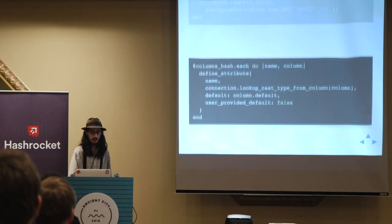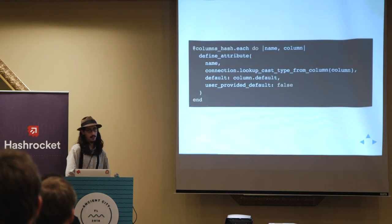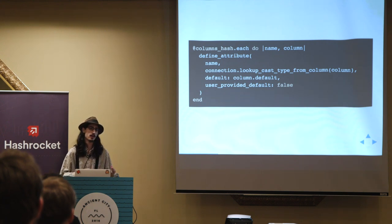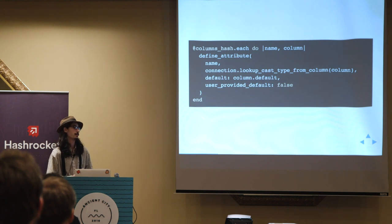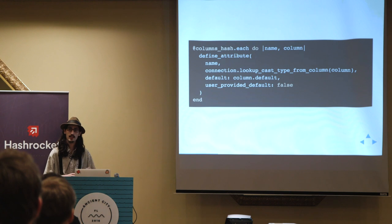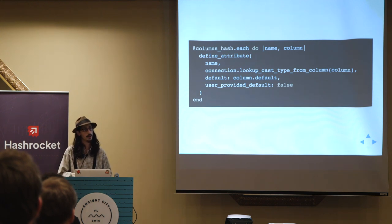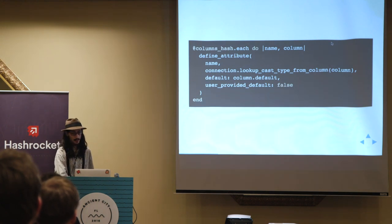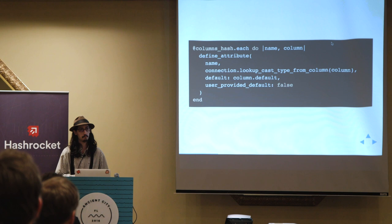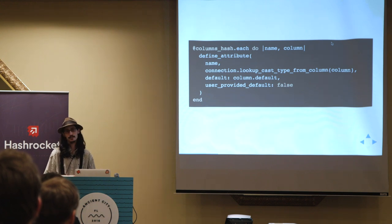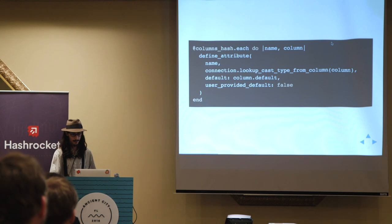The harder part was internally getting the code to look like this. This is 100% of the code now for Rails inferring your model structure from the database schema. It loops through the columns hash right after we load the schema — define_attribute is just like attribute but strict instead of lazy. We figure out what the right type object is based on that column, but we're just calling that public API for you, and it's very simple code now. This was the end result I was really happy with.